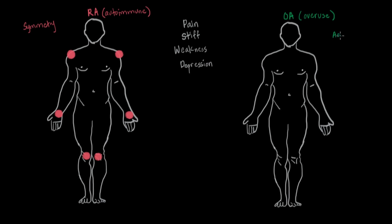Whereas in osteoarthritis, we often have asymmetry. Because OA comes from wear and tear, the use is not always even between the left and right side of the body, and the cartilage we start with may not be equal either. So these patients can have one shoulder, the other knee, maybe the same ankle, and the other wrist — a much more asymmetric pattern. Symmetry is a very important clue.